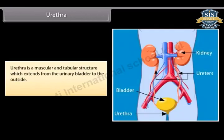The urethra is a muscular and tubular structure which extends from the urinary bladder to the outside, carrying urine out of the body.